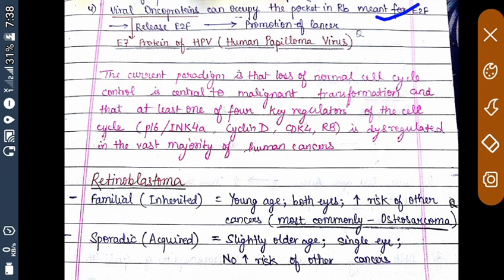Viral oncoproteins can occupy the pocket in RB that is meant for E2F. If that position is occupied by a viral oncoprotein, E2F cannot bind to the pocket and is released, promoting cancer. One such viral protein is the E7 protein of HPV — human papillomavirus. This is a mechanism by which certain viral proteins promote cancer.